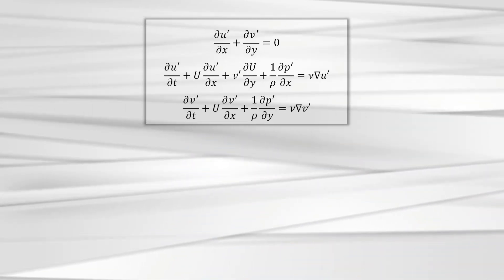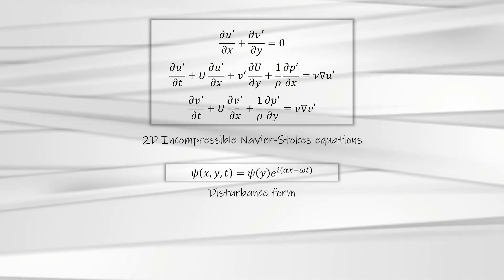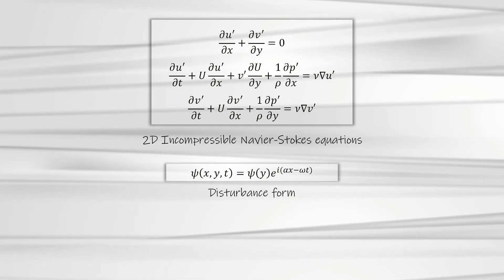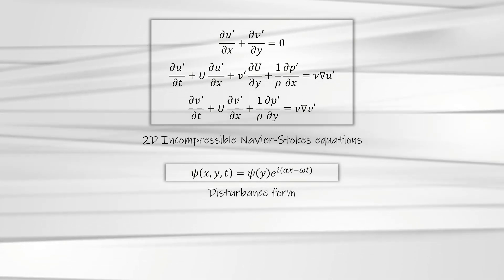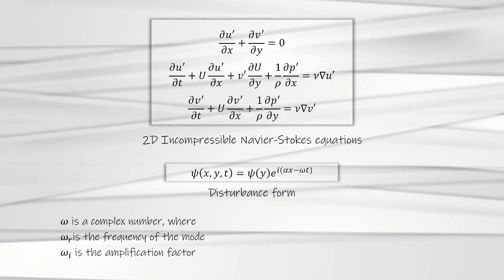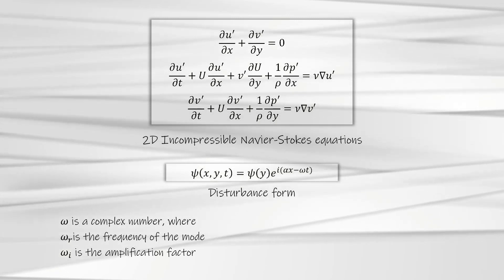Till now, we discussed the prediction of instability for free shear layer flows. A similar methodology can be followed to characterize the stability for parallel viscous flows. These types of flows are common inside laminar boundary layers. Let us directly start with the perturbation form of the two-dimensional incompressible Navier-Stokes equations. If we assume that the disturbance is in the form of a wave traveling in the axial direction, the stream function of a single mode in the perturbation can be written in the following form. Here, omega is a complex number where the real part represents the frequency of the mode and the imaginary part is the amplification factor.